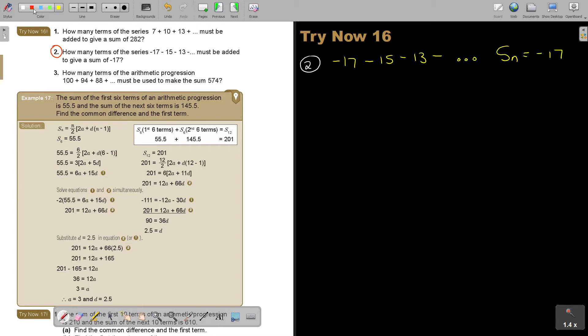So first write down your formula. Let's start. What is the sum formula? S_N equals N over 2, 2A plus D bracket N minus 1.